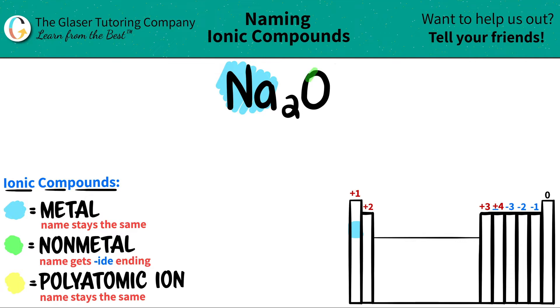And then oxygen is the nonmetal. Oxygen lives over here on the periodic table. So we're good, that's a nonmetal.